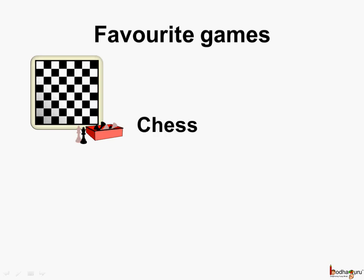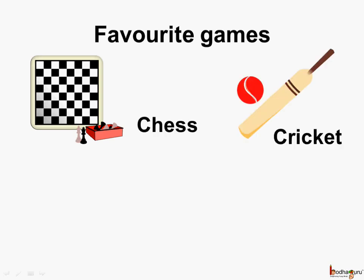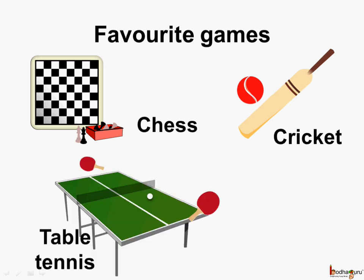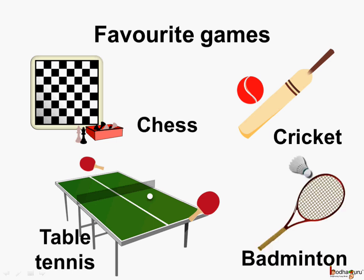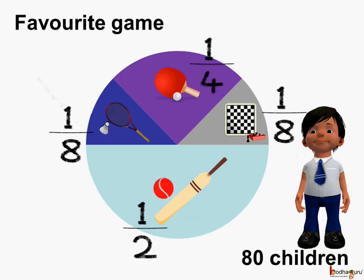Few children liked to play chess, some liked to play cricket, some liked to play table tennis, while others liked to play badminton. Among the children who joined the camp, one child made a list of favorite games of all the 80 children, and this is how he represented it — using a circle to represent the favorite games of 80 children.